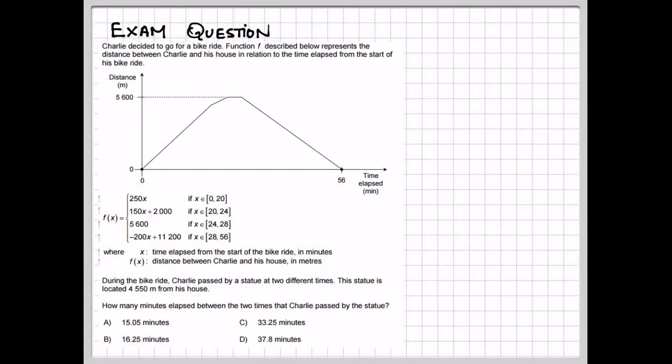That means this graph is made up of four smaller graphs. During the bike ride, Charlie passes a statue at two different times. This statue is located 4,550 meters from his house. How many minutes elapsed between the two times that Charlie passed the statue?